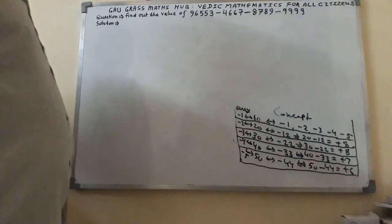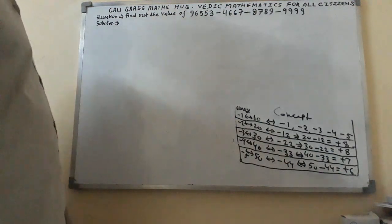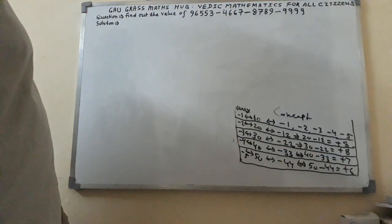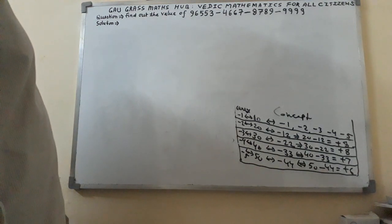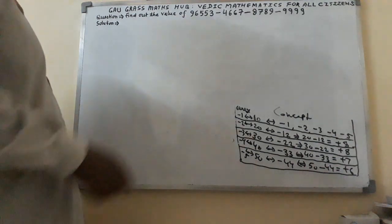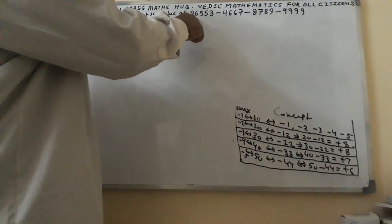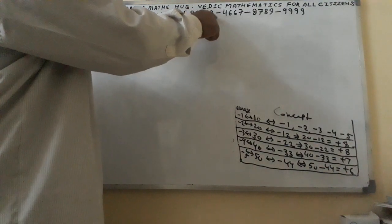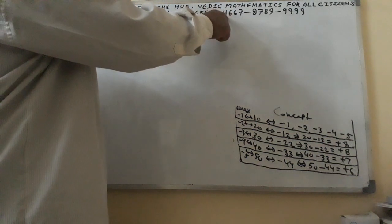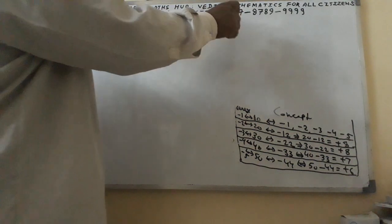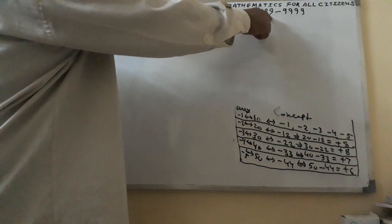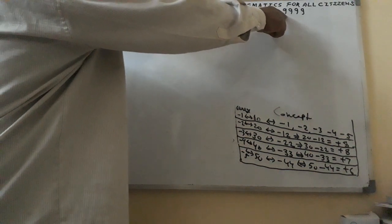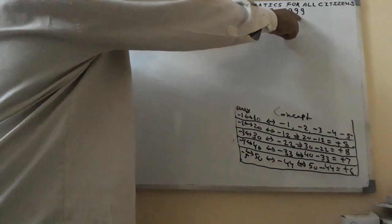Hello guys, I am from Gaugrath Master. Today I have taken one question related to basic mathematics. The question is: find the value of 96,553 minus 4,657 minus 8,789 minus 9,999.